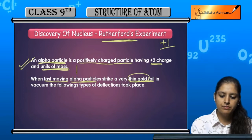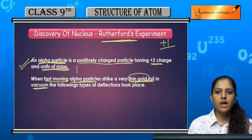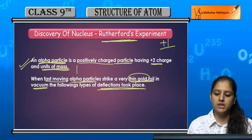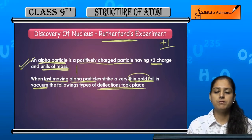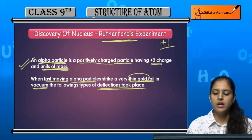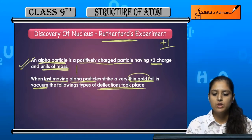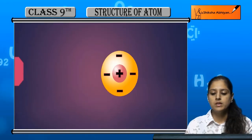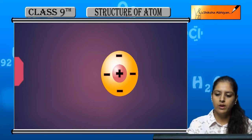The following types of deflections took place which we will now see in an animation. There were different deflections into the gold foil. You will see an animation to understand this experiment better. This is an atom of gold foil.